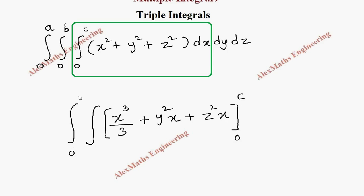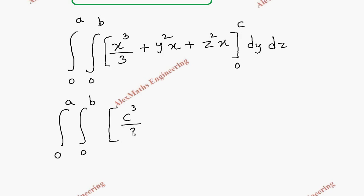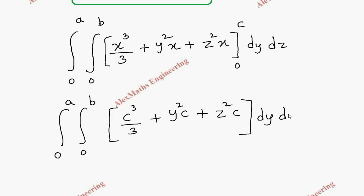Now we have to substitute the limit, which is from 0 to c, and the rest of the terms are written as they are. We have two integrals: one from 0 to a and one from 0 to b, outside we have dy dz. Substituting the upper limit in place of x gives: integral 0 to a, integral 0 to b of c cube by 3 plus y square times c plus z square times c. The lower limit makes everything zero.